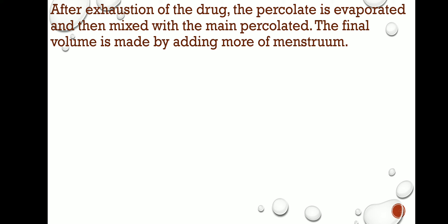After exhaustion of the drug, the percolate is evaporated sufficiently. In the concentrated case, both portions are evaporated. Then the concentrated extract is mixed with the main percolate, and after mixing, the final volume is made up — concentrating from 3000 ml down to 1000 ml, then further to 500 ml as required.